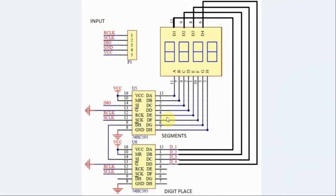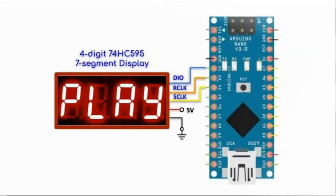The module is interfaced with the Arduino through the input lines shown here. The DIO line is connected to a digital pin, the serial clock is connected to another digital pin, and the register clock or latch is connected to a third digital pin. In this diagram with the Nano, the data IO line connects to pin D2, the register clock to pin D3, and the serial clock to pin D4.